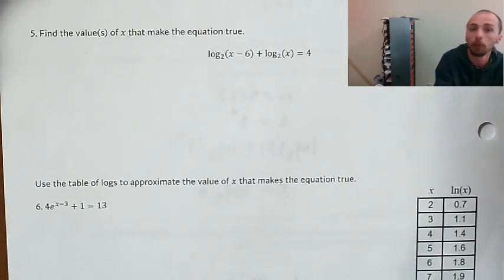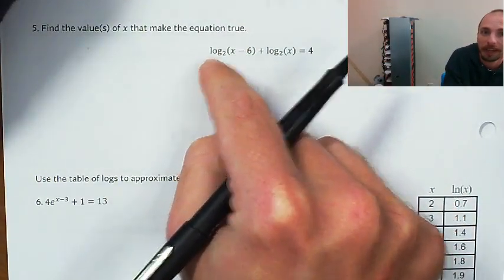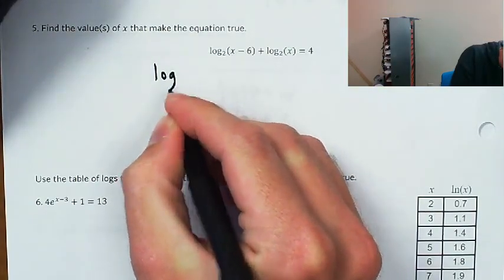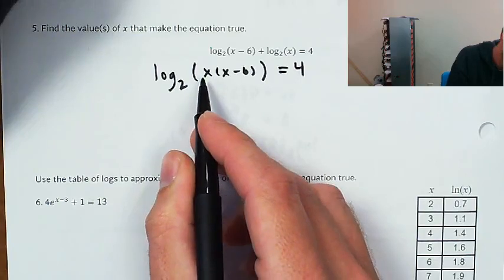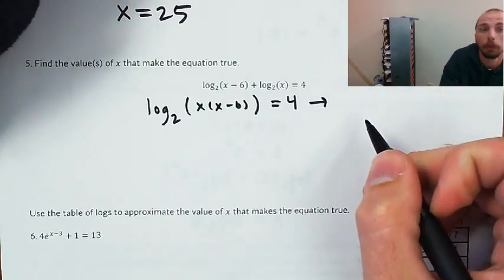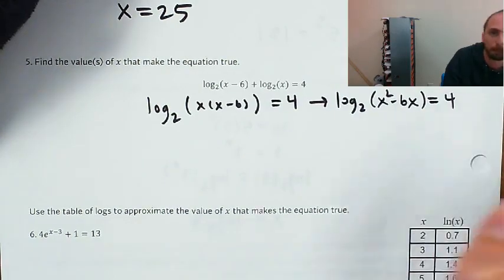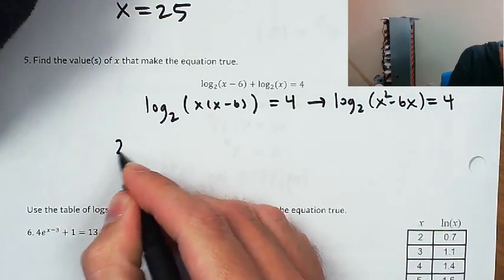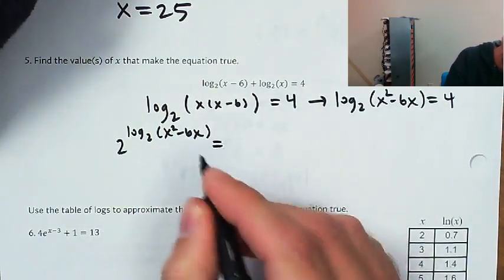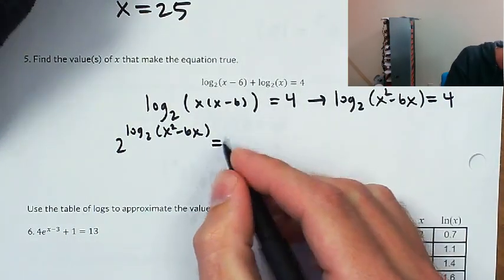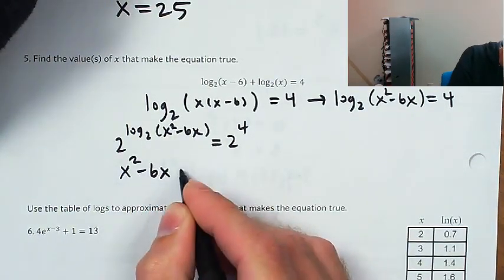This is an example of a log equation that's going to return an extraneous solution. I'm going to use a log property: if I'm adding two logs with the same base, I can multiply their arguments to write it as a single log. So log base 2 of x times (x minus 6) equals 4. I'll distribute: log base 2 of x squared minus 6x equals 4. Then I take 2 to both sides as a power. 2 to the log base 2 of x squared minus 6x is just x squared minus 6x, using that fundamental identity. That equals 2 to the 4th, which is 16.